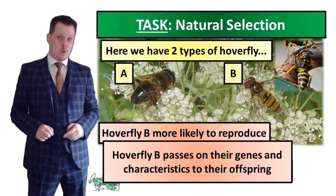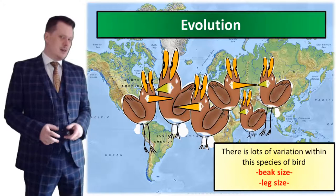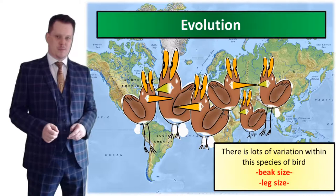So now we can explain the process of natural selection. Next we're going to look at how natural selection can lead to the development of new species. Here we have another population of birds, and there's lots of variation within this species of birds.